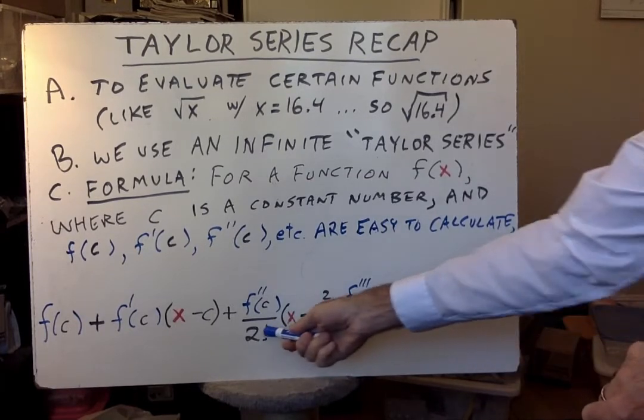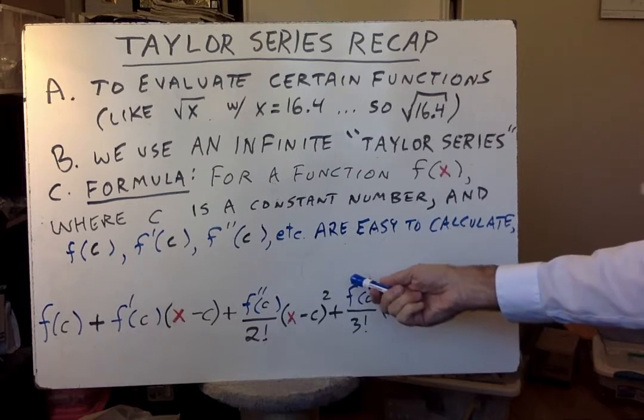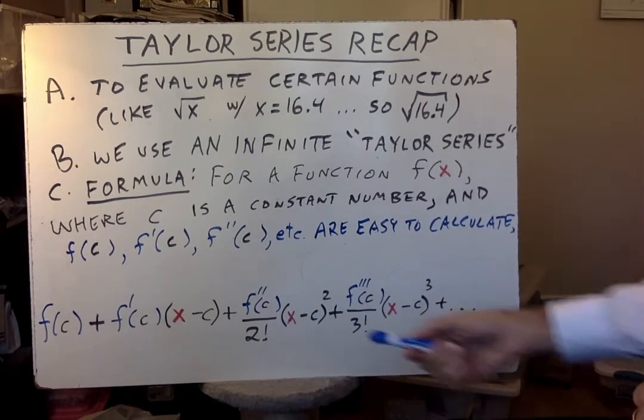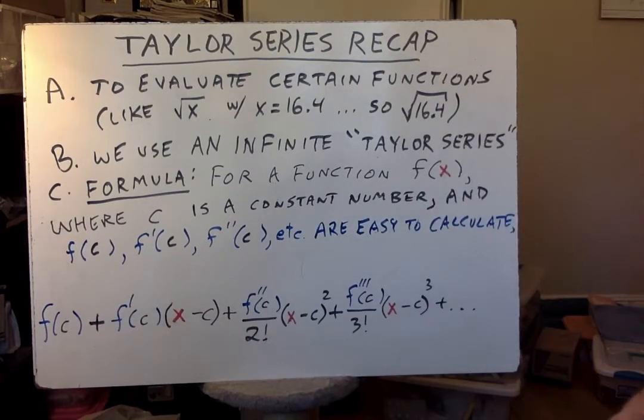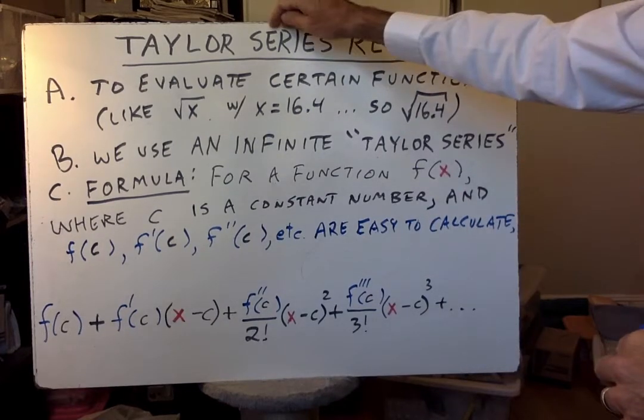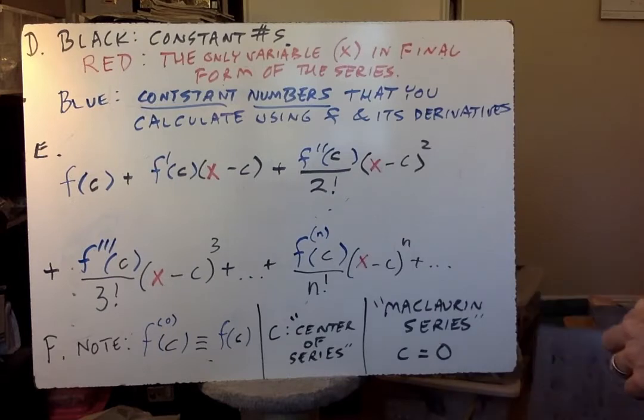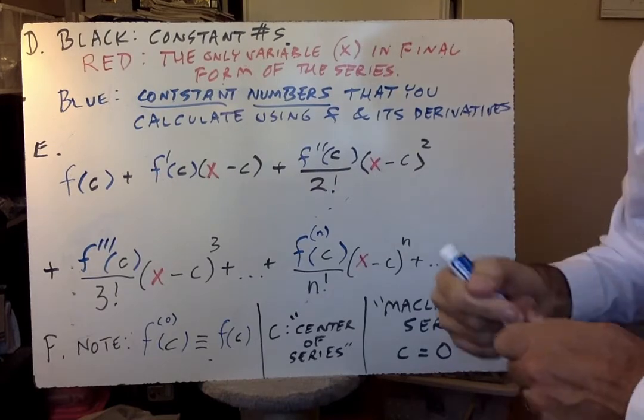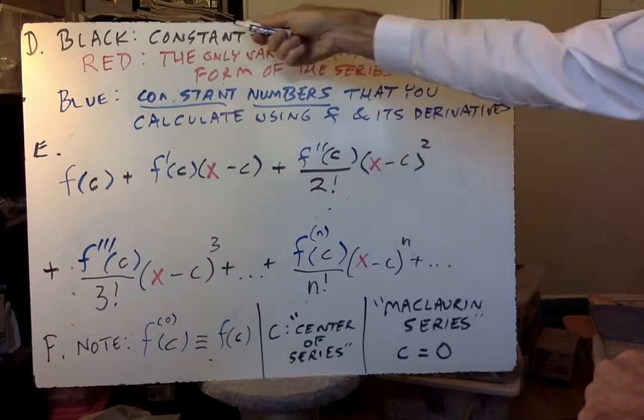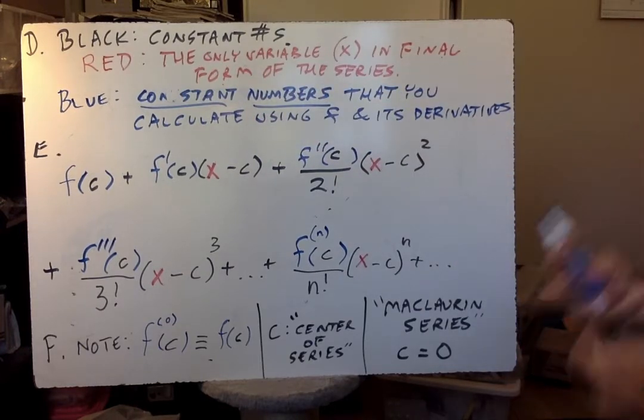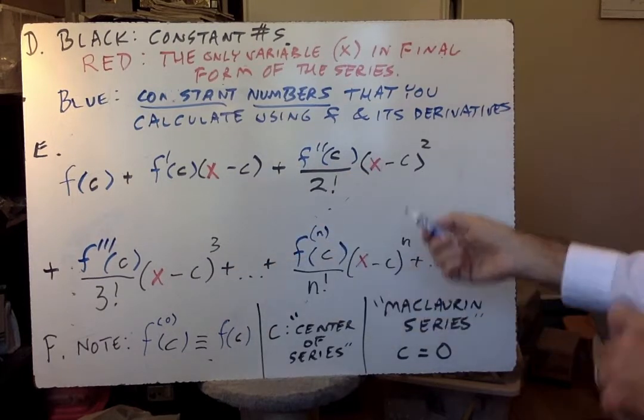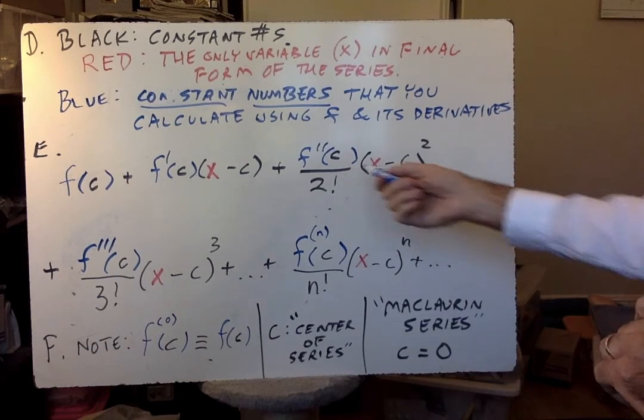But the last stage of those operations is to plug in a specific value, the value of c, and get a number. What's in black ink are numbers that are very simple, they're just obviously numbers you plug them in. What's in blue ink are numbers but they're numbers you have to reach by doing a calculation and usually that involves derivatives. And finally what's in red ink is the only variable that will be in your final form of the series. So here's that color code: black are constant numbers, blue are constant numbers that you have to calculate using the function itself and its derivatives. Blue are constant too. And red is the only variable. Everything else will be numbers.